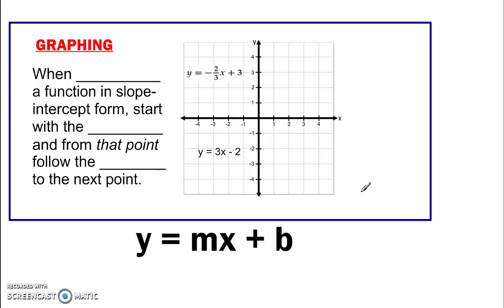When graphing a function in slope-intercept form, we want to start with the y-intercept and from that point, very important, follow the slope. You can think of it this way. Begin. B for begin. Begin here and move this. So begin at positive 3 and move negative 2 over 3, down 2 over 3. 1, 2, 3. And there's my second point.